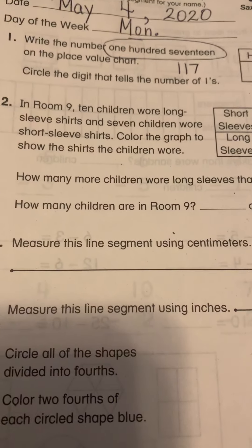Long sleeve is down here. So we've got 10. 1, 2, 3, 4, 5, 6, 7, 8, 9, 10. And then we have seven children that wore short sleeve shirts. That's 1, 2, 3, 4, 5, 6, 7.